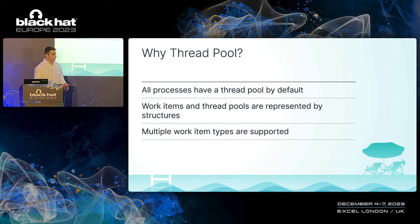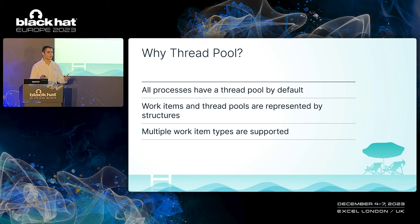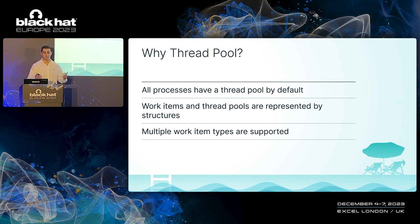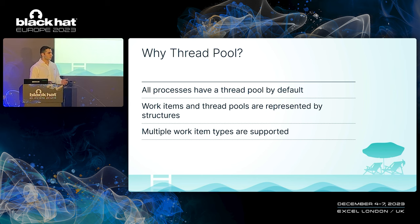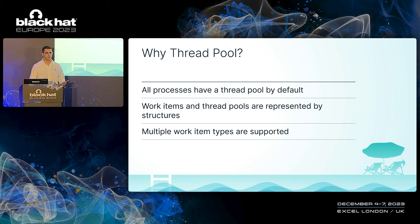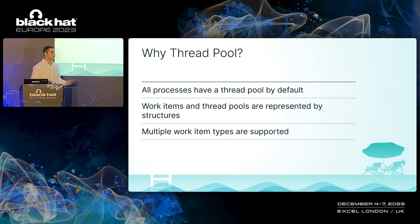Now that we understand what a thread pool is, let me tell you why I chose the thread pool as my target. First, all Windows processes have a thread pool by default, which ensures that any new process injection techniques will be applicable against all Windows processes. In addition, work items and thread pools are represented by structures, which increases the possibility of having an execution primitive based only on allocation and writing. Third, multiple work item types are supported, which means we have more opportunities and generally increases the attack surface.